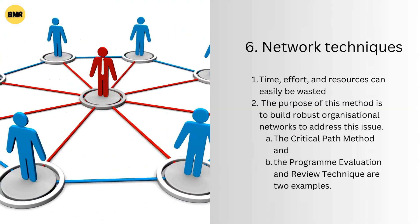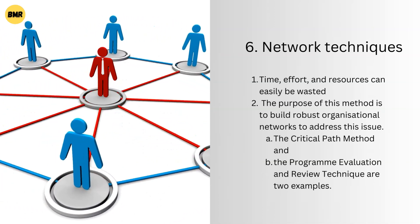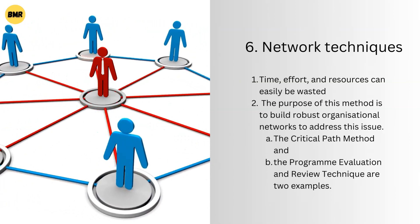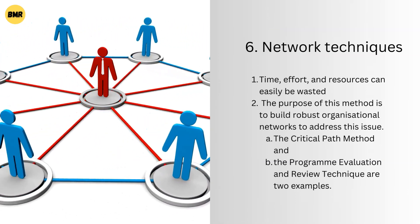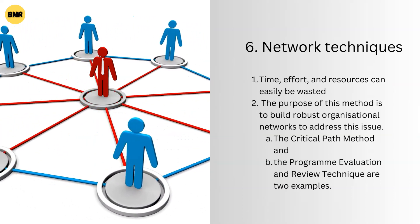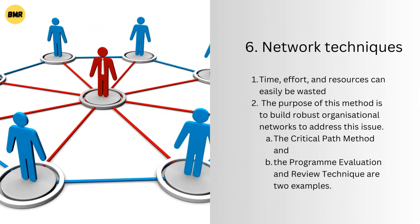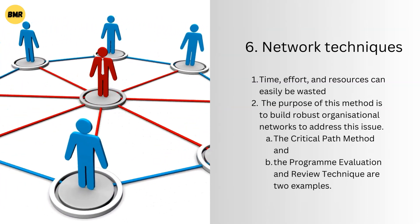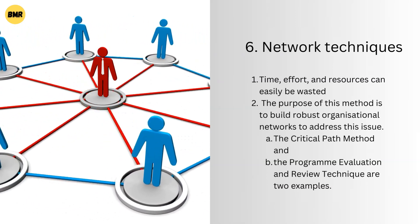Network Techniques: time, effort, and resources can easily be wasted if employees are not fully committed to completing complex tasks. The purpose of this method is to build robust organizational networks to address this issue. Under this strategy, there are two main quantitative methods: the Critical Path Method and the Program Evaluation and Review Technique. Work is effectively divided up across networks using these methods, and they save tons of money and time.